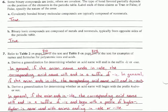Number 6. Some binary compounds are ionic, others are covalent. The type of bond favored partially depends on the position of the elements in the periodic table. Label each of these claims as true or false. If false, specify the nature of the error.